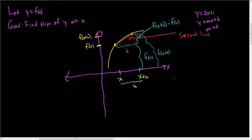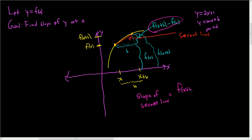So the slope of the secant line is rise over run. The rise is f of x plus h minus f of x, and the run in this case is simply h.